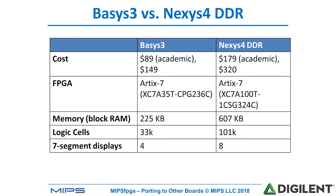If we compare this board with the Nexus 4 DDR board, we can see that it costs about half as much. It contains the same Artix-7 FPGA, but a smaller version — so it has less memory, fewer logic cells, and the board itself offers fewer peripherals. For example, instead of eight seven-segment displays, it offers four.